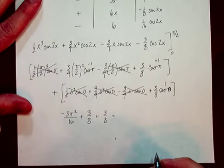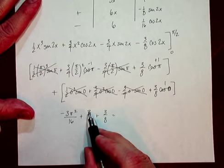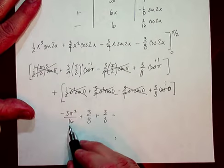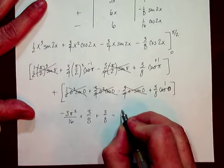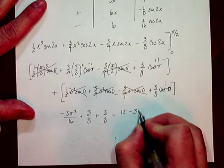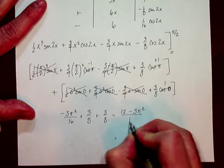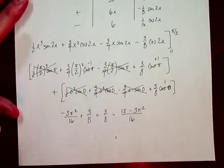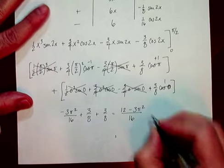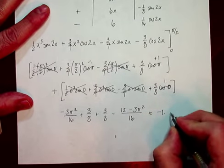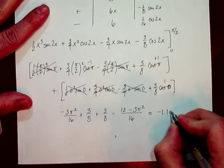This right here winds up being negative 3 π squared over 16. Plus 3/8, coming from this term right here. Plus 3/8, coming from this term right here. And what I'm going to get is these would be 6 over 16, if they had a common denominator. Together, they are 12. And you have 12 minus 3 π squared over 16, which actually turns out to be negative 1.101.